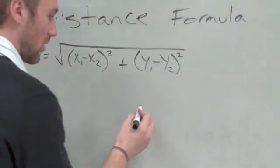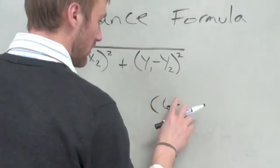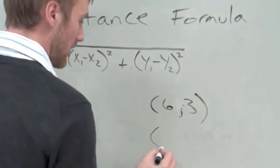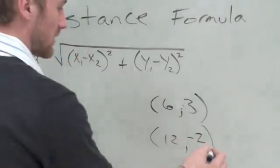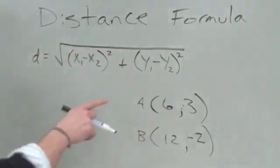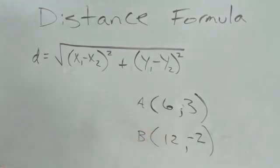Let's say our points are (6, 3) and (12, -2). We're finding the distance from point A to point B. We want to find how far it is from this point on our coordinate plane to this point right here.